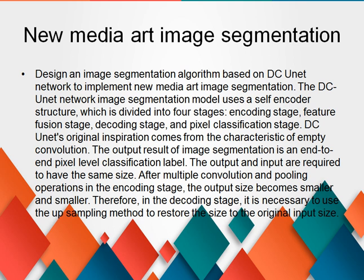An image segmentation algorithm based on DC-RNet network is designed to implement new media art image segmentation. The DC-RNet network image segmentation model uses a self-encoder structure divided into four stages: encoding stage, feature fusion stage, decoding stage, and pixel classification stage. DC-RNet's original inspiration comes from the characteristic of dilated convolution. The output result of image segmentation is an end-to-end pixel-level classification label.